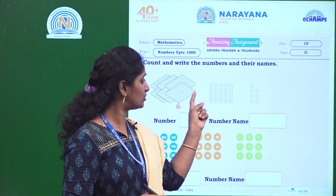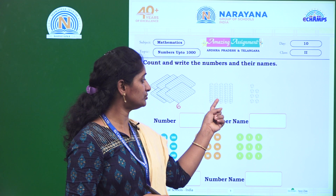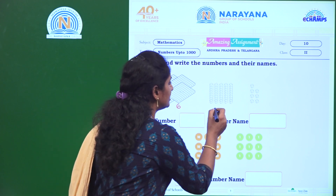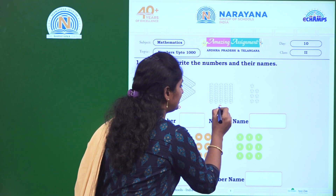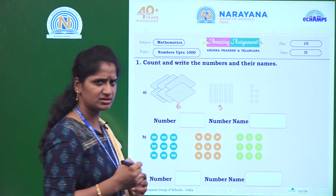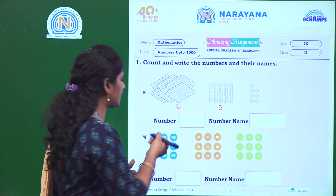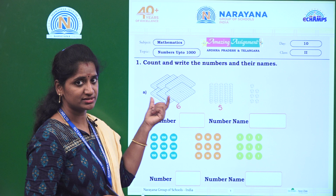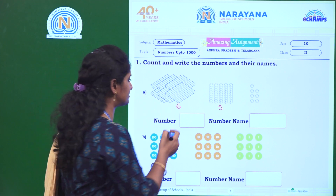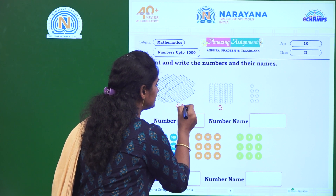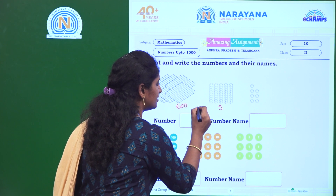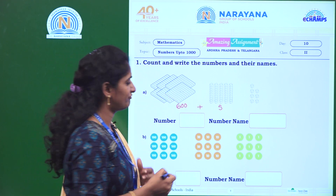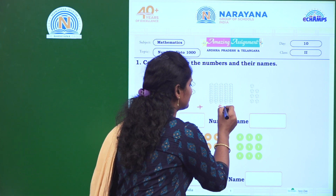And how many tens? 1, 2, 3, 4, 5. So, how many tens? Here 5 tens. I will expand this one. How many hundreds? 600, right? So, here I am writing 600 plus how many tens? 5 tens, it means 50.